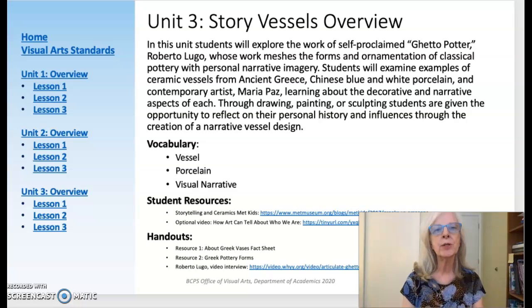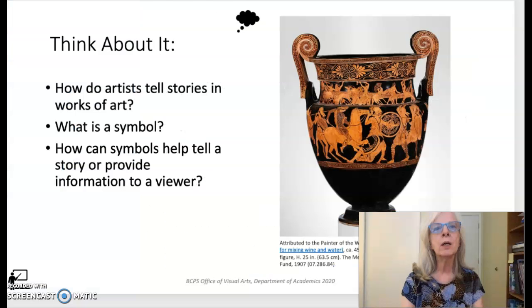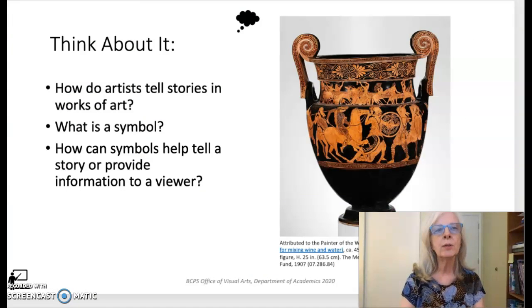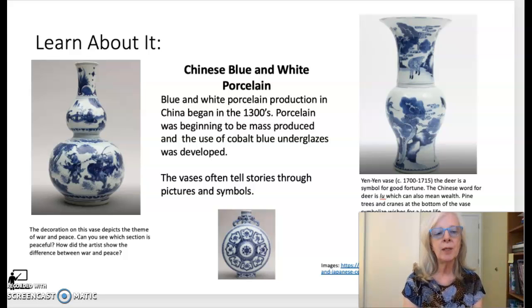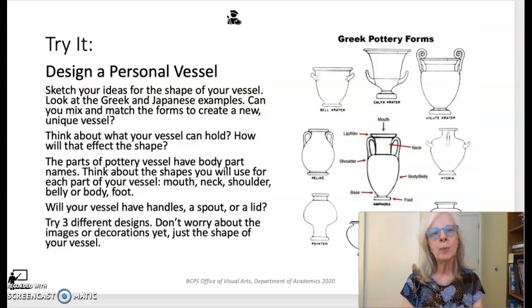The final unit in the object series, Story Vessels, builds on explorations from the two previous units. The first lesson focuses on the historical traditions of pottery making from ancient Greece and 14th century Chinese porcelain. In addition to examining the size and shape of these vessels, students will examine how artists use them to tell narratives through imagery and patterning. After examining and discussing the examples, students sketch ideas for a personal vessel, focusing on the shape and features such as handles, a base or spout, and then present three unique vessel designs to share.